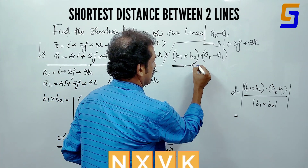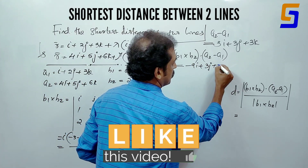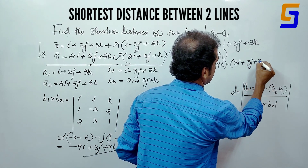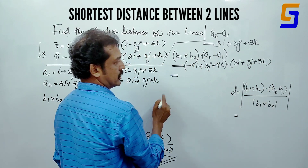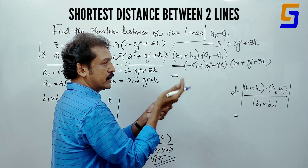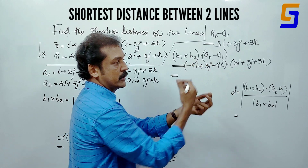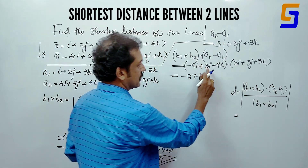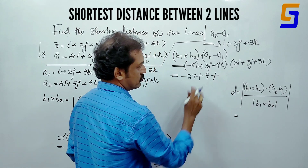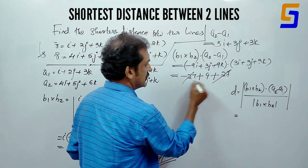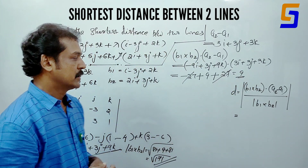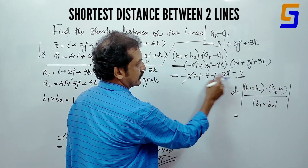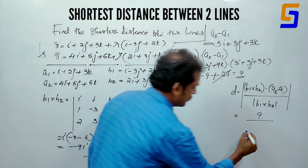So b1 cross b2 dot (a2 minus a1) equals (minus 9i plus 3j plus 9k) dot (3i plus 3j plus 3k). That equals minus 27 plus 9 plus 27, which is 9. Therefore, shortest distance d equals 9 divided by root of 171.